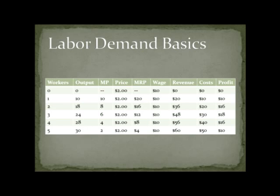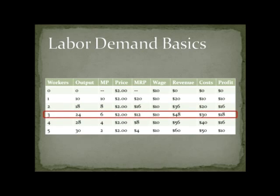Doing the subtraction gives profit, which is maximized at $18. For the first, second, and third workers, the marginal revenue product was higher than the wage, so it was profit-increasing to hire them. Hiring the first worker earns $20 but costs $10, so profit goes up $10. The second earns $16 and costs $10, so profit goes up $6. The third earns $12 and costs $10, so profit goes up $2. Hiring stops there because the fourth worker only earns $8 for the firm but costs $10, reducing profits by $2.